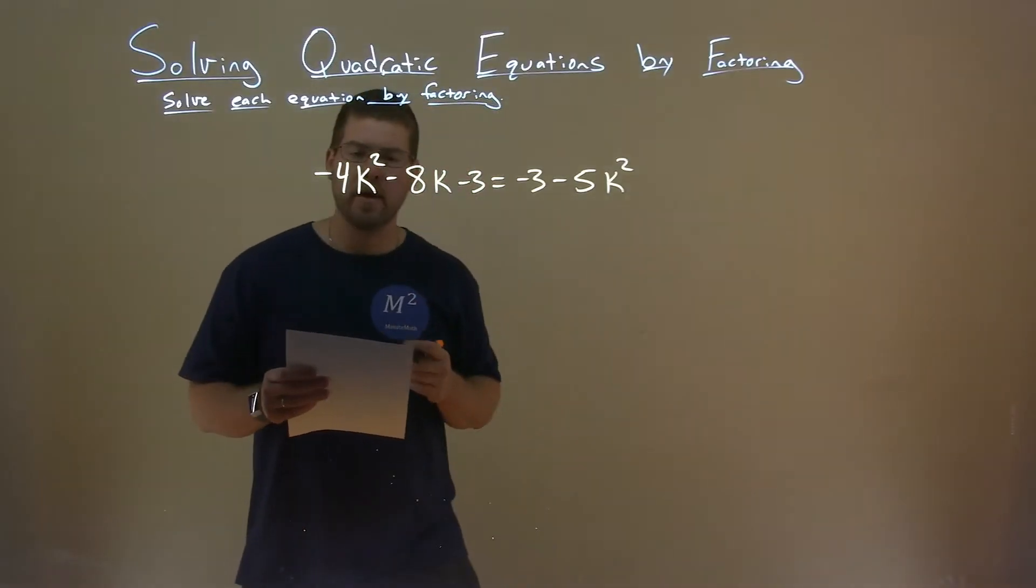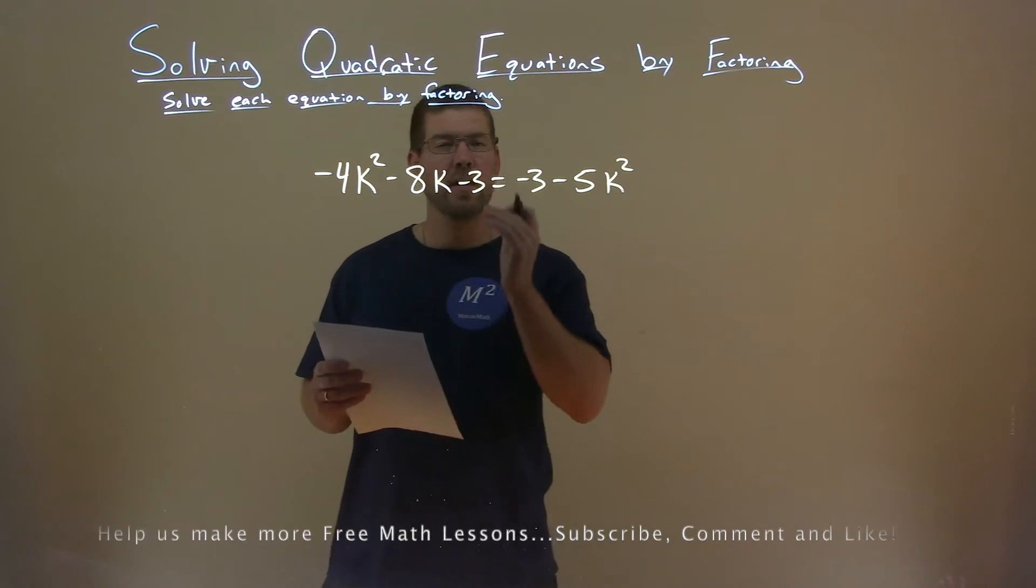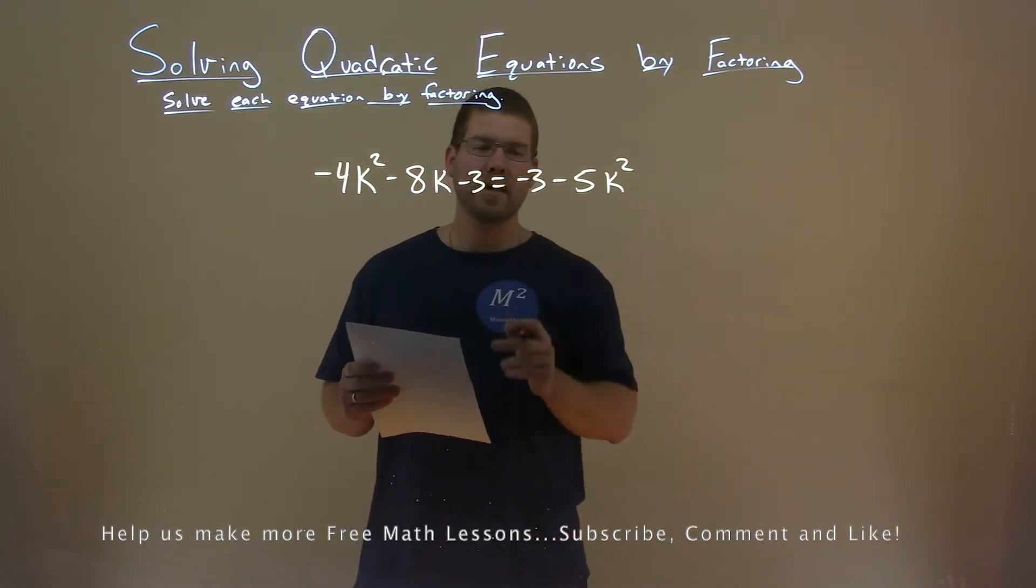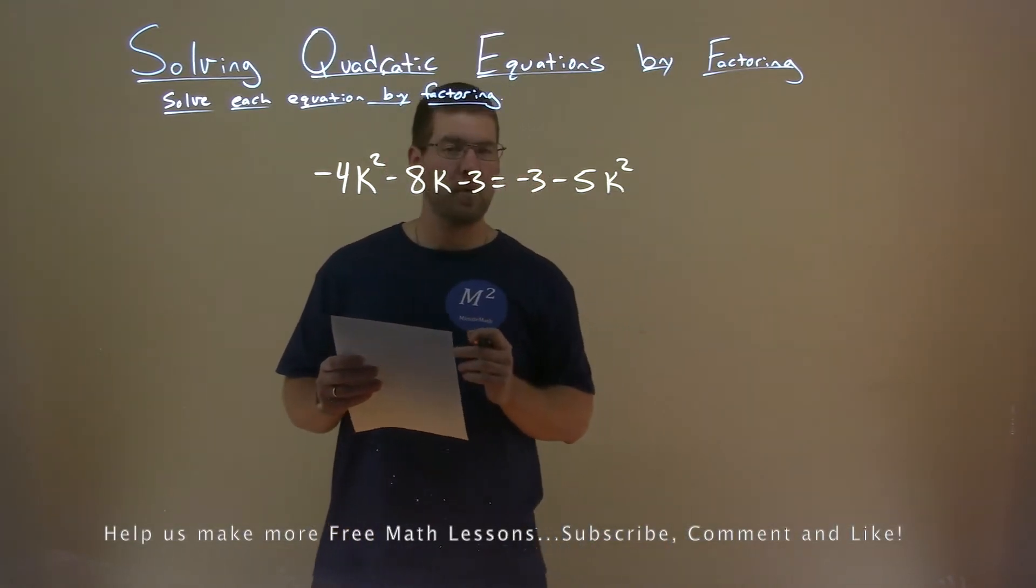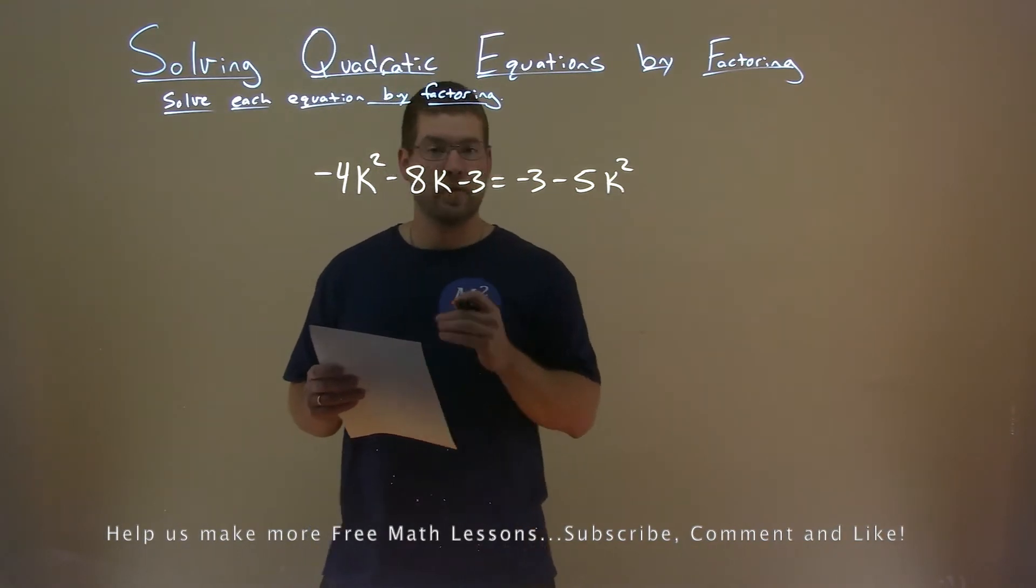We're given this problem right here: minus 4k squared minus 8k minus 3 equals negative 3 minus 5k squared and we need to solve this by factoring.